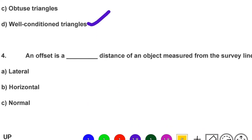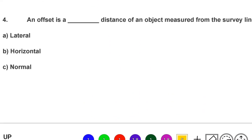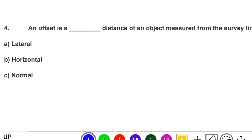Next question: an offset is a distance of object measurement from the survey line — option A: lateral, option B: horizontal, option C: normal, option D: inclined. The correct answer is option A, lateral.